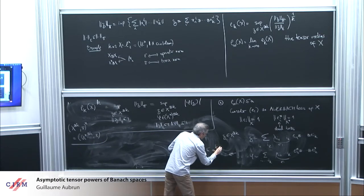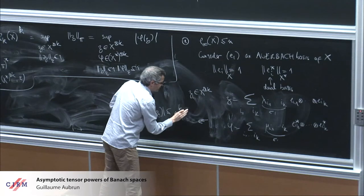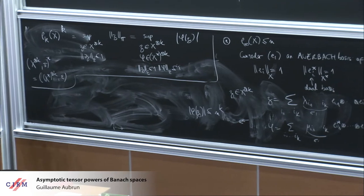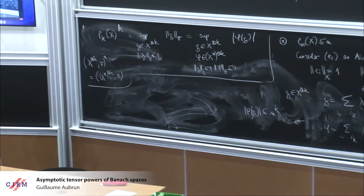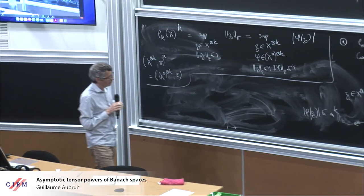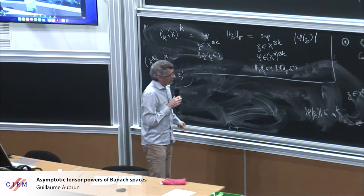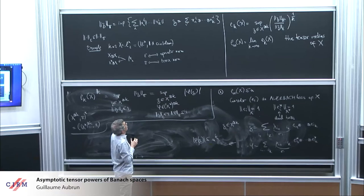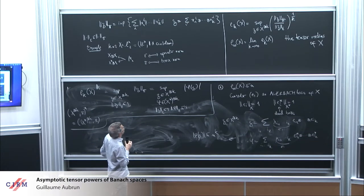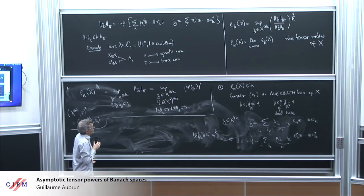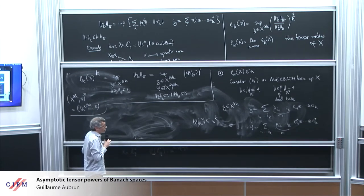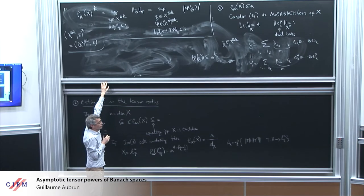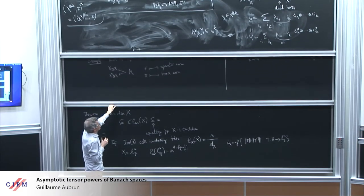If you are a bit smarter, you can show there's a factor of (k-1) here rather than k, which shows that the value n for the Euclidean space cannot be achieved at any finite k — you have to go to infinity.